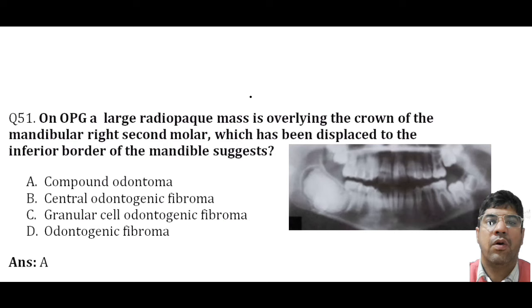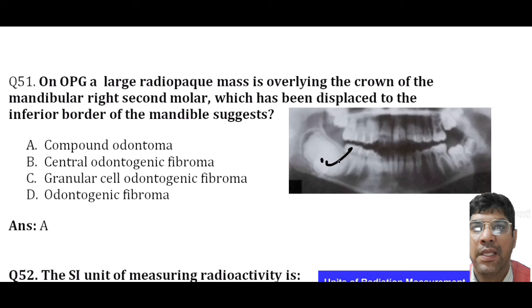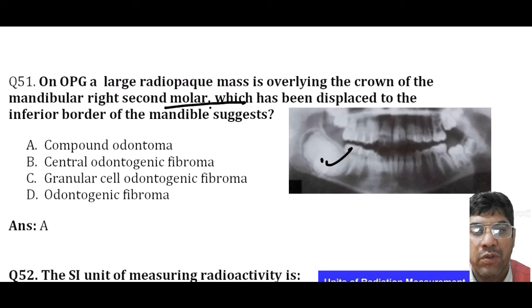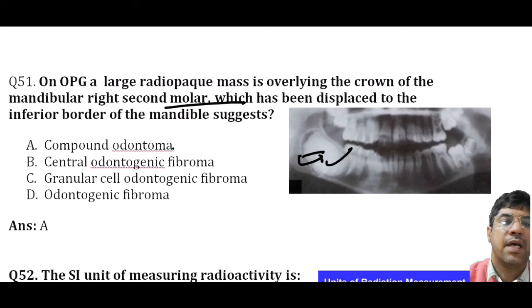On an OPG, a large radiopaque mass overlying the crown of the mandibular right second molar that has been displaced to the inferior border of the mandible suggests a compound odontome. Odontomes are the most common type of odontogenic tumors composed of dental tissue. Compound odontome consists of small tooth-like structures in the mass and can cause displacement of the adjacent tooth.